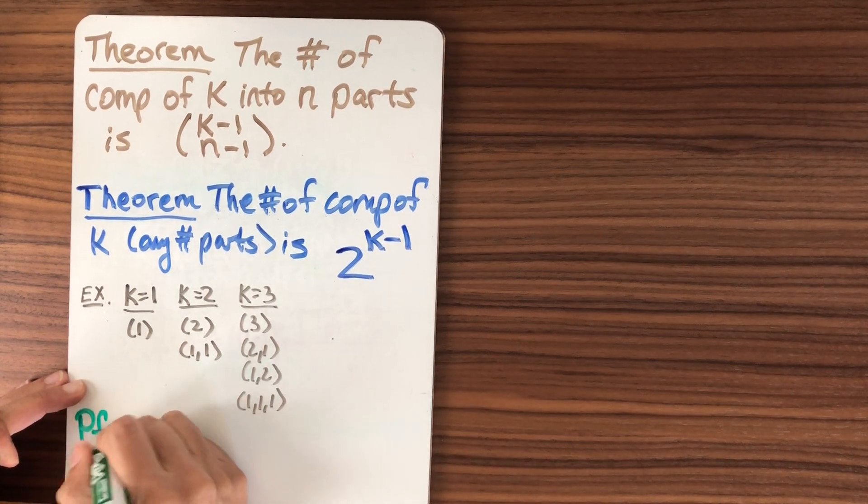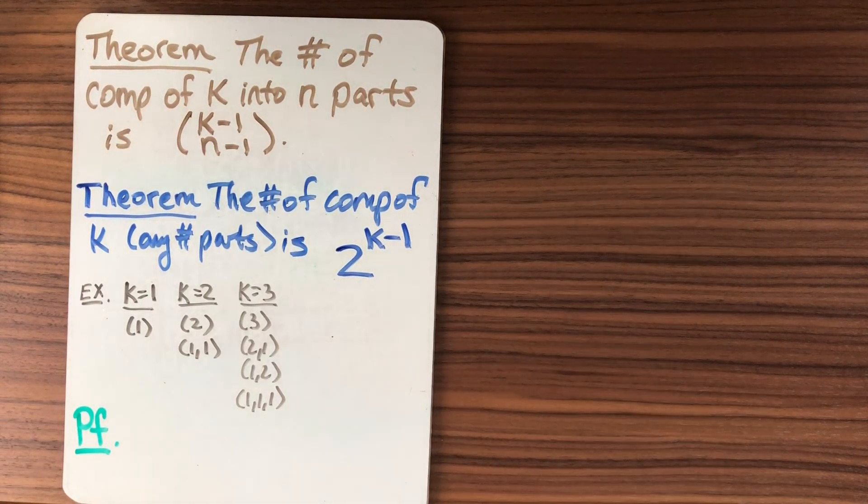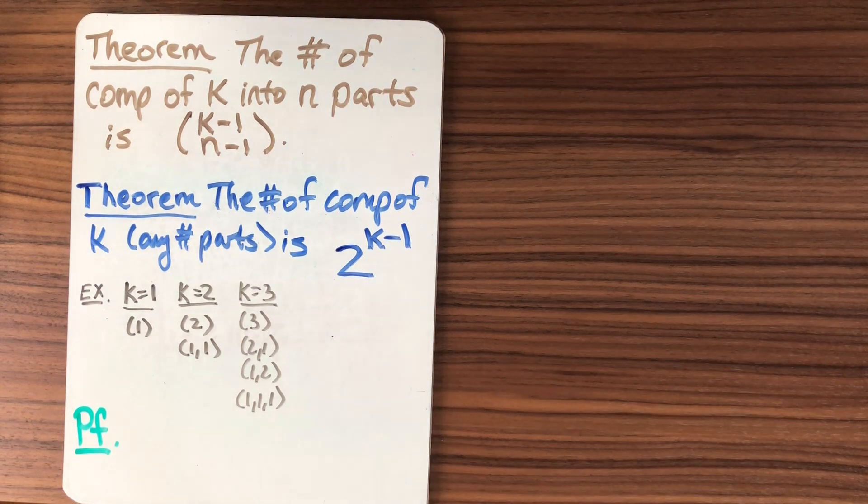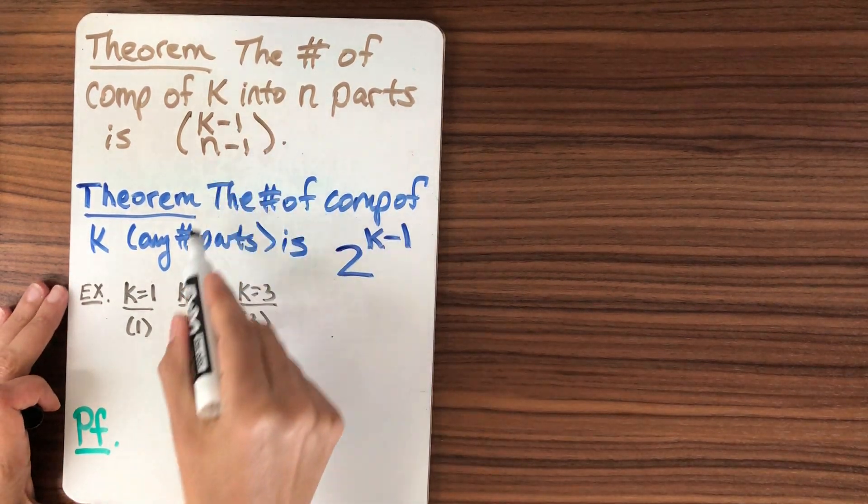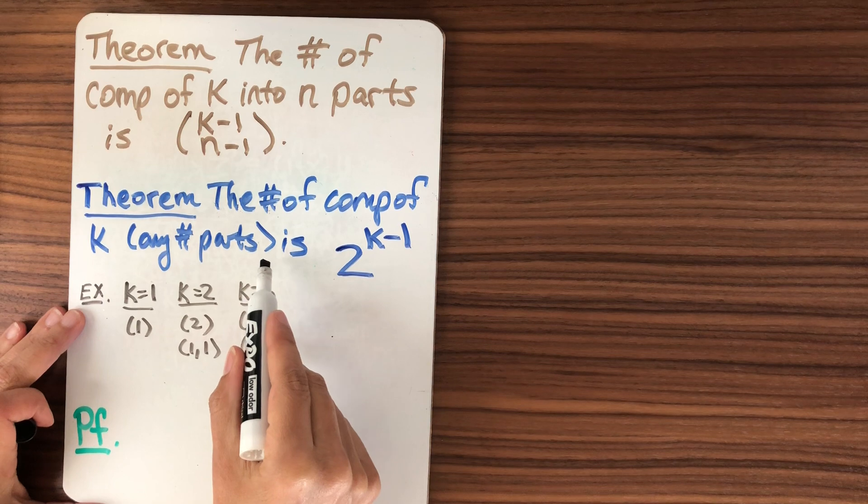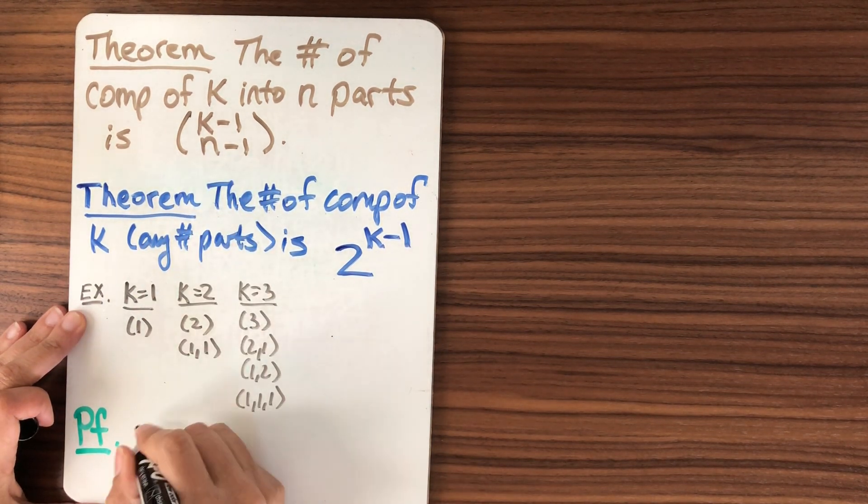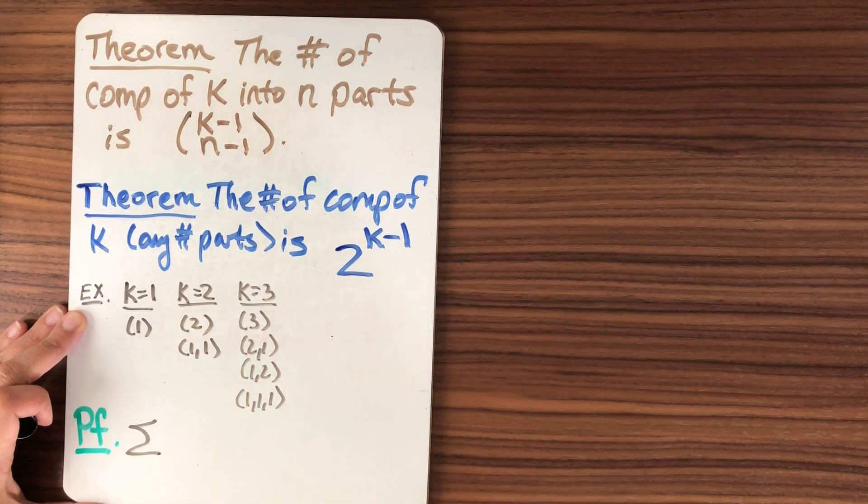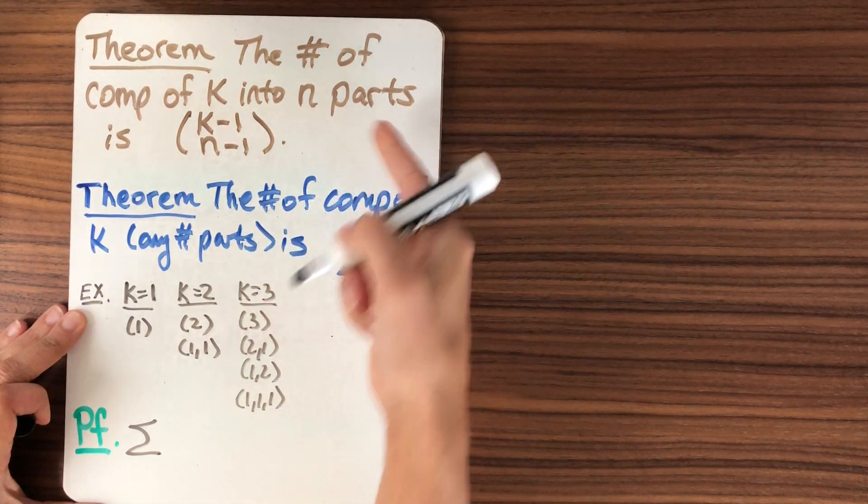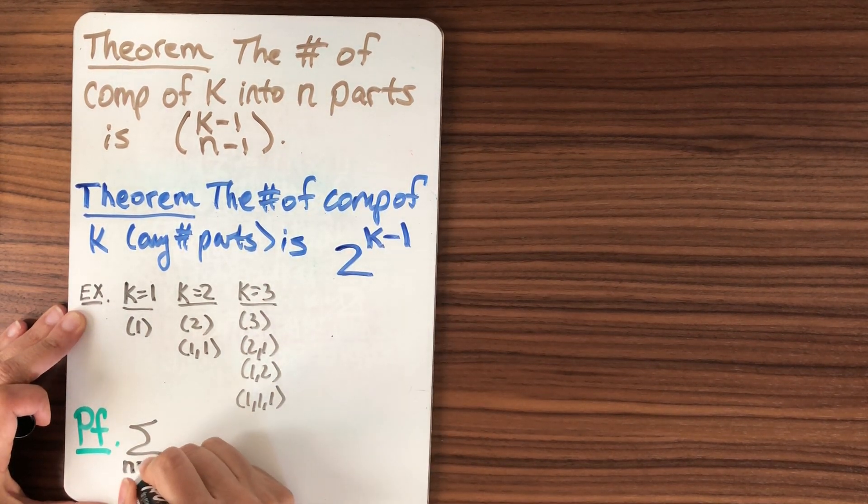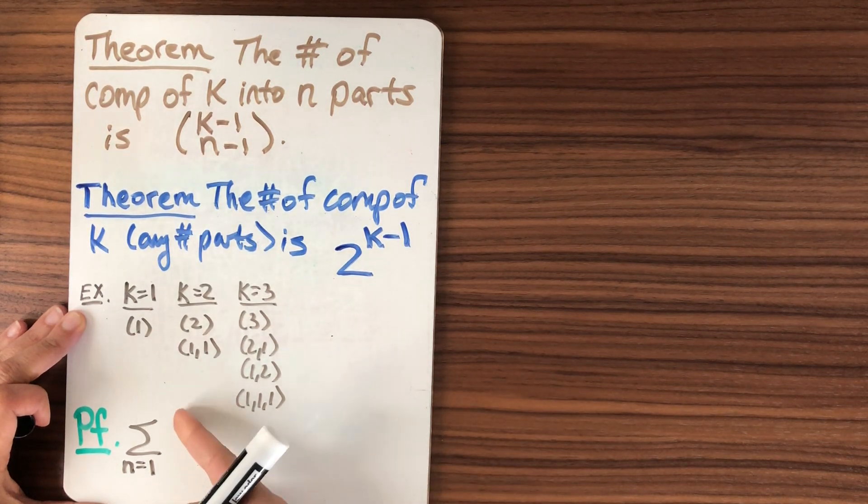So the proof is pretty easy. We're going to use this formula that we have here. So if we're looking at compositions of k into any number of parts, that means we're just summing up all the n's here. So ask yourself, what are the possible values of n? What does n range from? The number of parts. Well, you have to have at least one part.